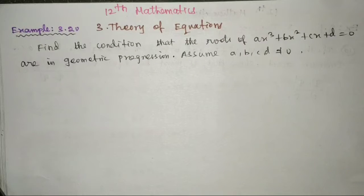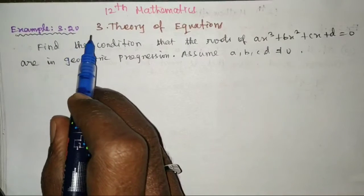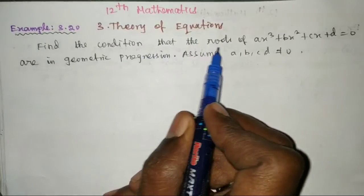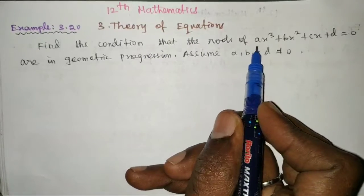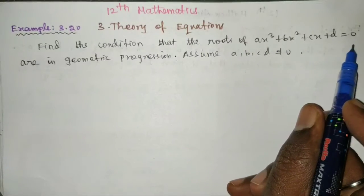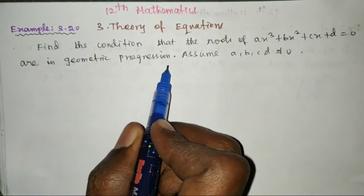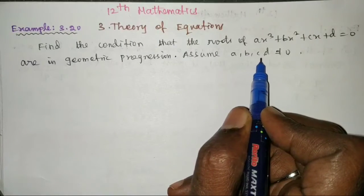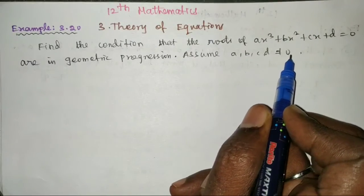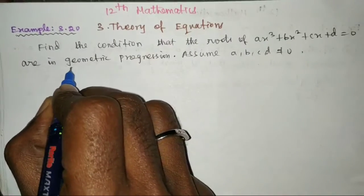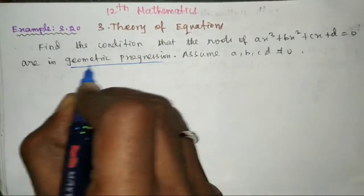Hello viewers. 12th mathematics, Theory of Equations, Example 3.20. Find the condition that the roots of ax³ + bx² + cx + d = 0 are in geometric progressions. Assume a, b, c, d are not equal to 0. That is, the roots are in GP.